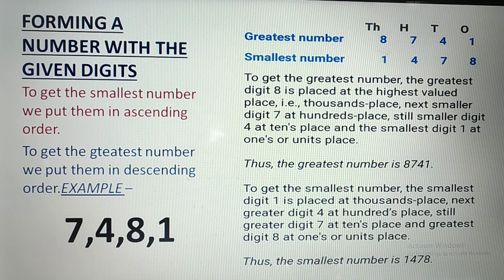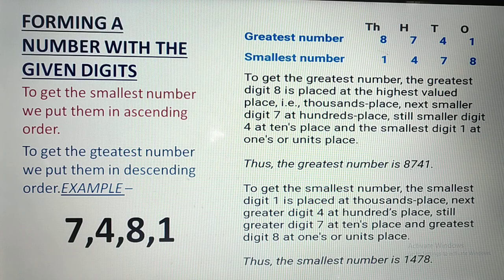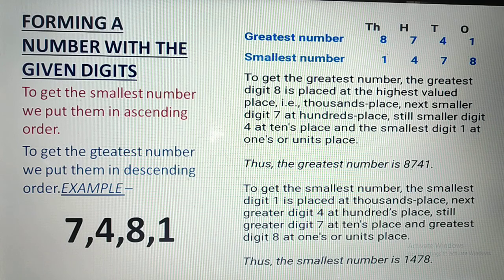Example: there are 4 digits — 7, 4, 8, 1. To make the greatest number, we place the largest digit first. In the place value chart, I have put 8, 7, 4, 1 — so 8741 becomes the greatest number. To make the smallest number, I have written 1, 4, 7, 8 — so 1478 is the smallest. To get the greatest number, the greatest digit 8 is placed at the highest valued place, and so on.